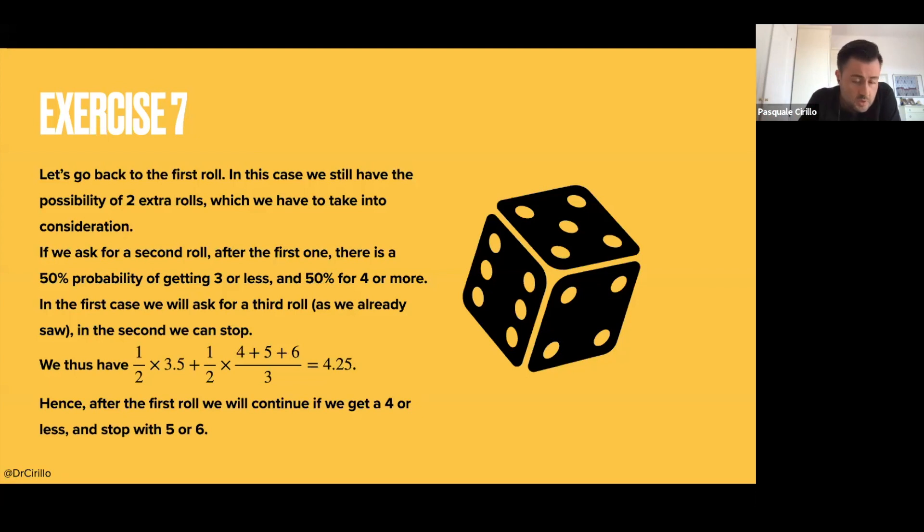If I compute this, it's 4.25. So after this computation, I have that in the first toss, I will continue if I get 4 or less, and I will stop if I get 5 or more. Because if I have an expected return of 4.25, I can only improve that if I get 5 or 6. So if in the first toss, I get 5 or 6, I stop. Otherwise, it is more convenient for me to try again with the second toss.